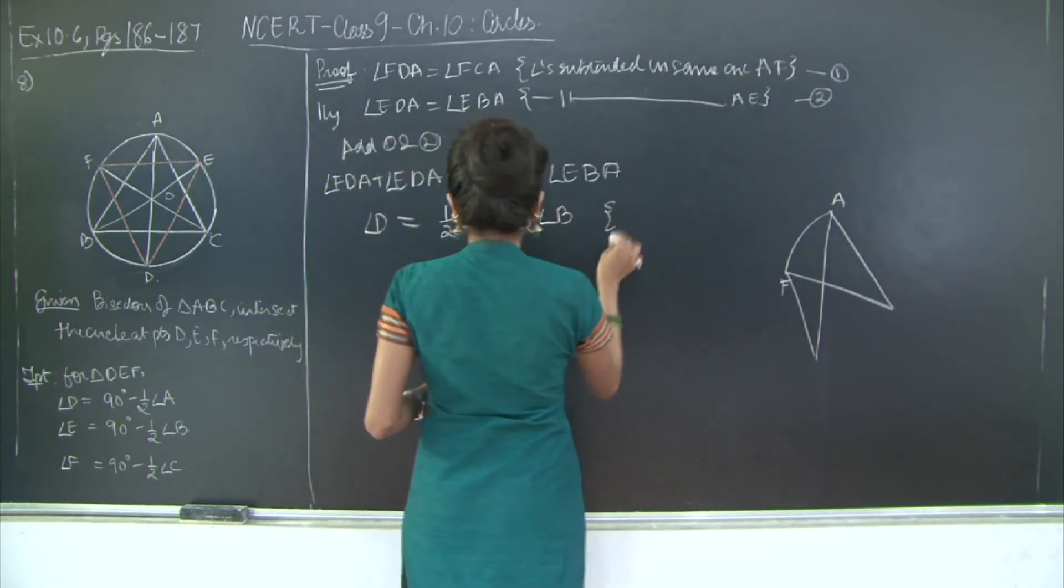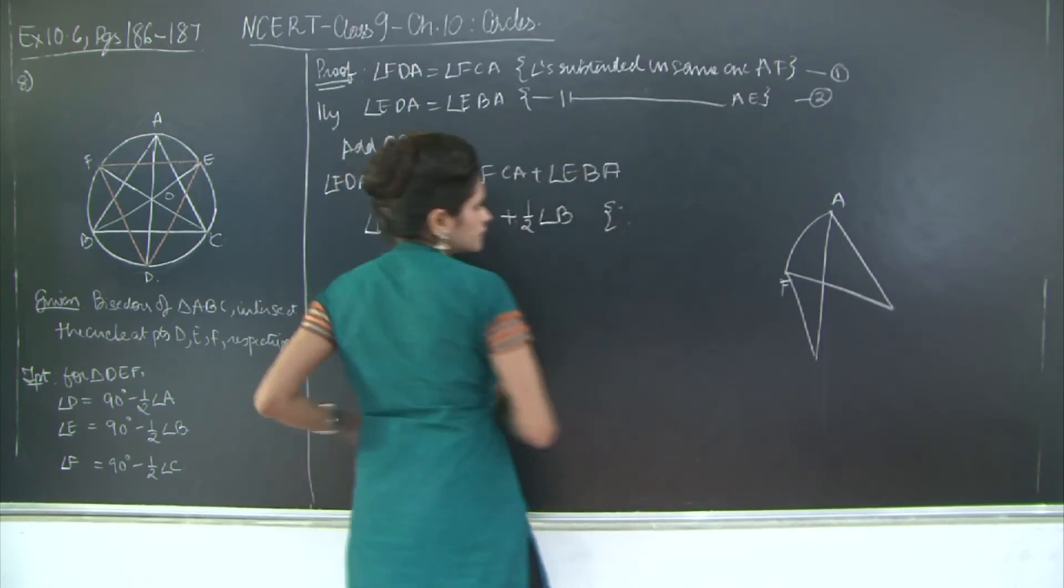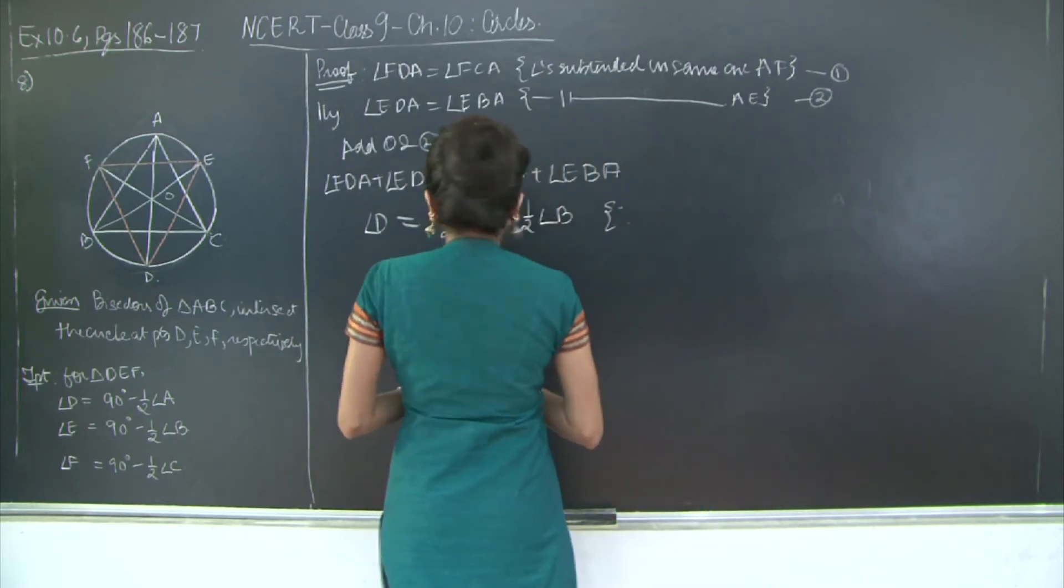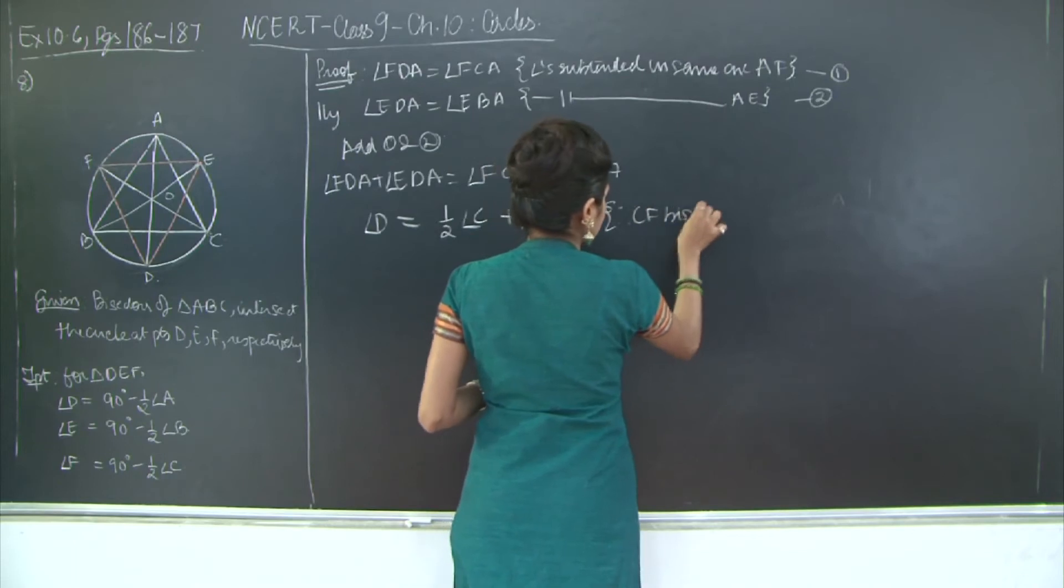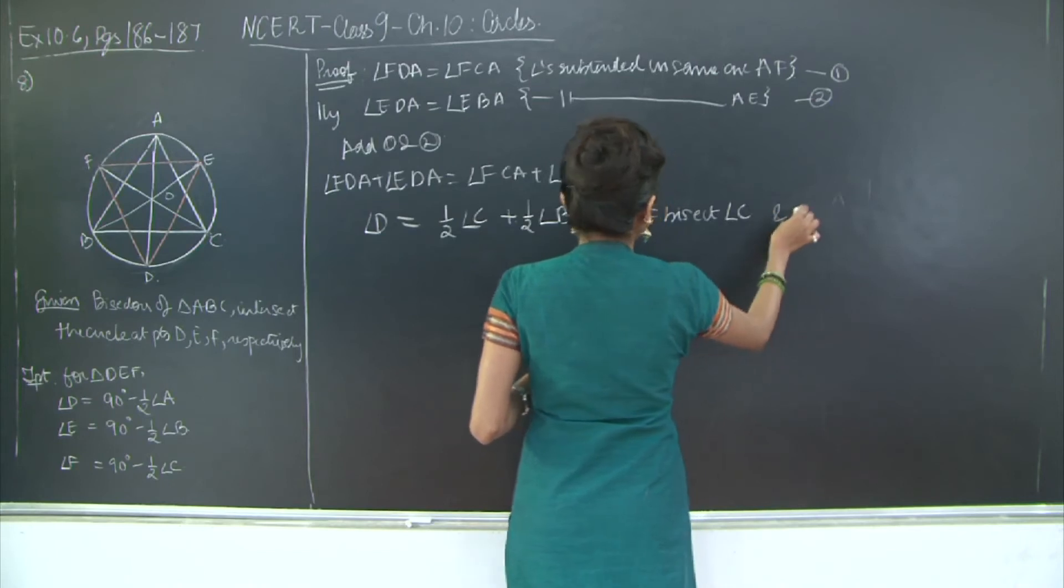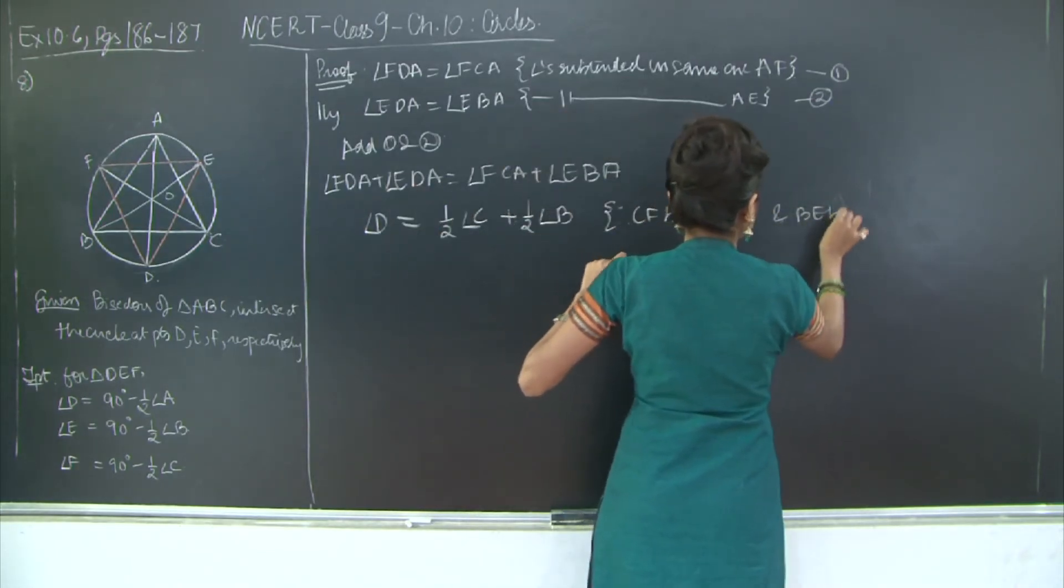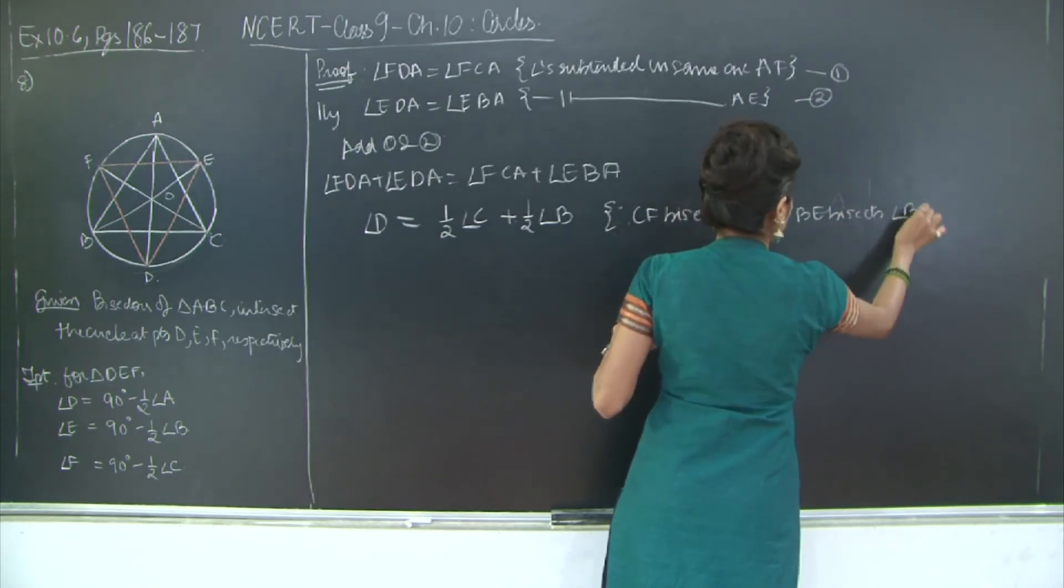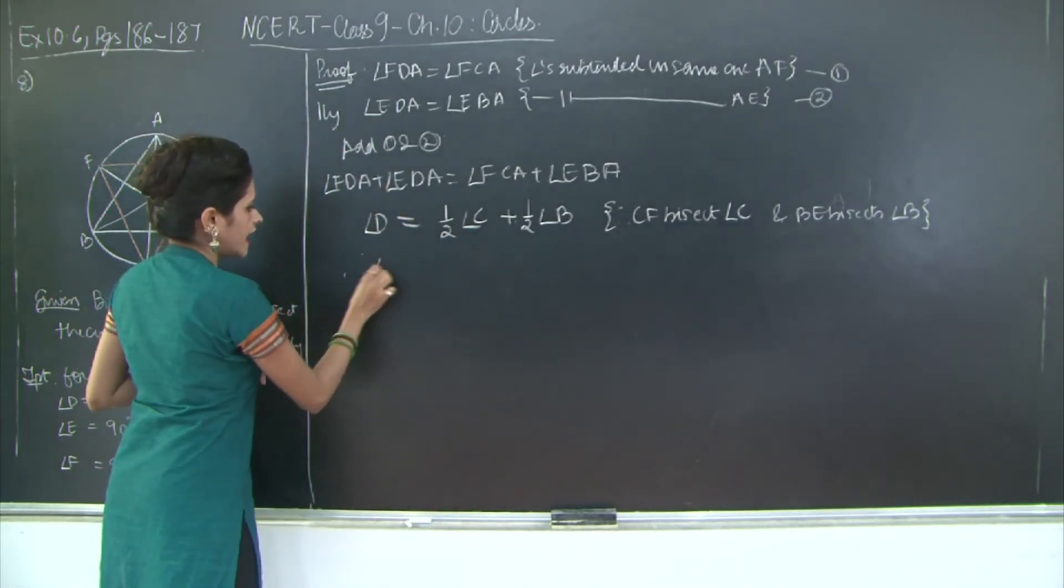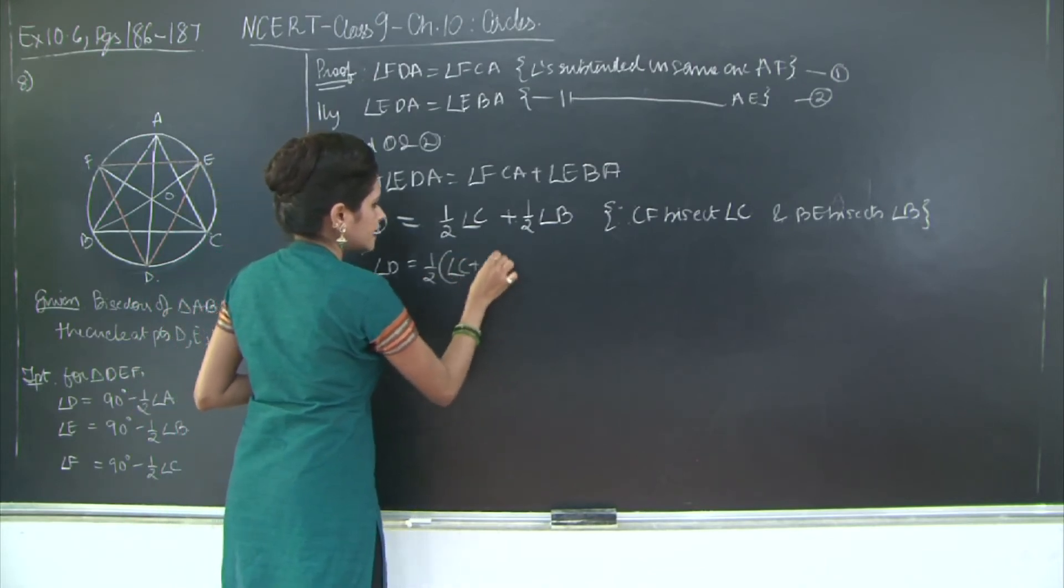So this is half of angle B, and here I will write my reason for these two. Since CF bisects angle C and BE bisects angle B, therefore angle D is equal to half angle C plus angle B.